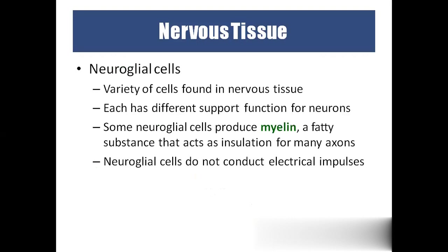Neuroglial cells are the other type of cells that support the neurons. The myelin sheath is formed by Schwann cells, which are one type of supporting cell. Neuroglial cells cannot conduct electricity — only neurons conduct electricity. So the whole nervous system has two types of cells: neurons, which conduct, and neuroglial cells, which are the supporting cells.